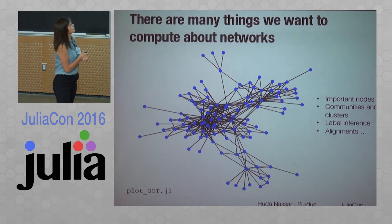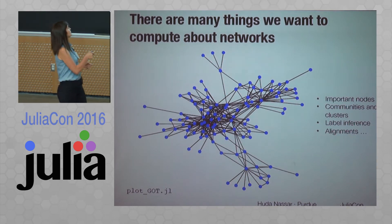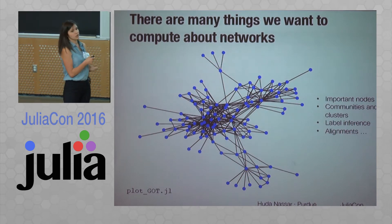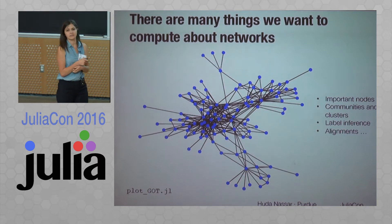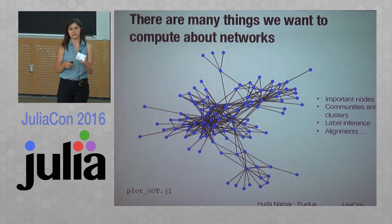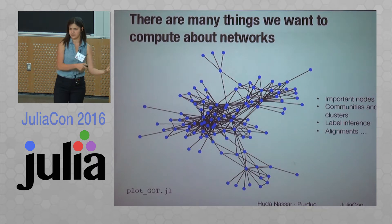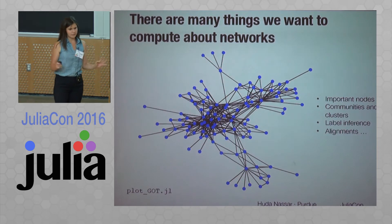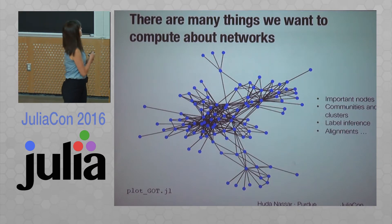Finding the most important node in a network is important and has many applications, but there are so many other applications in networks. Things like finding communities — given a certain node, can I know which community does that node belong to? That's very important in biological applications. There are things like label inference: if I have a subset of nodes and I know certain labels of these subsets, can I know the labels of the other subsets that are not labeled? There are many things you can do, also network alignment, which I'll touch on at the end of this presentation.